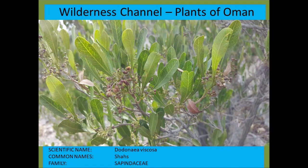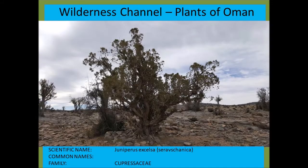Dodonaea viscosa — medium-sized trees growing in arid areas from the Sapindaceae — the lychee family. Another Juniperus excelsa specimen.